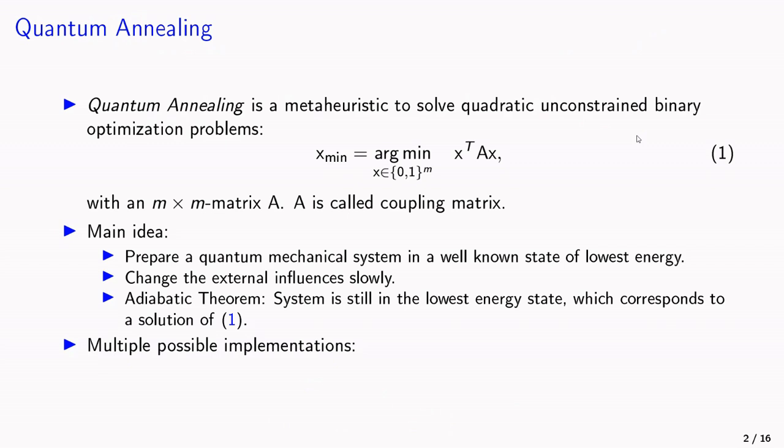There are multiple possible implementations of such quantum annealers, but we focus on the machines of D-Wave. They have niobium loops that have to be cooled to temperatures below 7 millikelvin, so that they become superconducting.